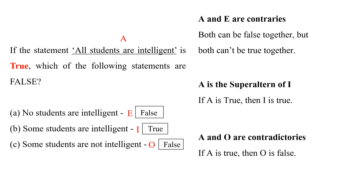Lastly, A and O are contradictories, which means if A is true, then O is false. So the correct answer to the question is option A, 'no students are intelligent,' and option C, 'some students are not intelligent.'